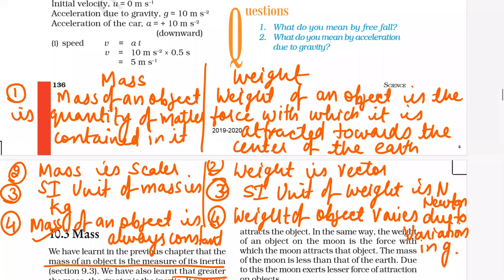Mass of an object is never zero. Weight of an object can be zero at the center of the earth, because the value of G is zero at the center of the earth.